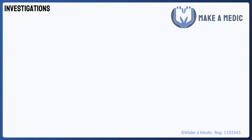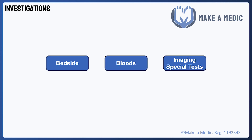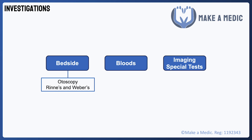Now let's look at how we can investigate hearing loss. It's helpful to take a bedside, blood, and imaging or special tests approach. By the bedside, you can look in the ear with an otoscope to examine the canal for earwax build-up and signs of discharge, as well as look at the tympanic membrane for any evidence of perforation. You can also do Rinne's and Weber's tests by the bedside to identify the type of hearing loss. Blood tests aren't always indicated, although checking the inflammatory markers might be useful when infective causes are suspected.